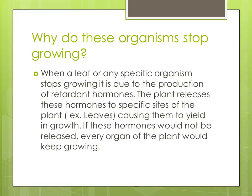The biggest question regarding determinate growth is why do these organisms stop growing? When a leaf or any specific organ stops growing, it's due to the production of retardant hormones. The plant releases these hormones to specific sites of the plant — for example, leaves or seeds — causing them to cease growth. If these hormones were not released, every organ of the plant would keep growing.